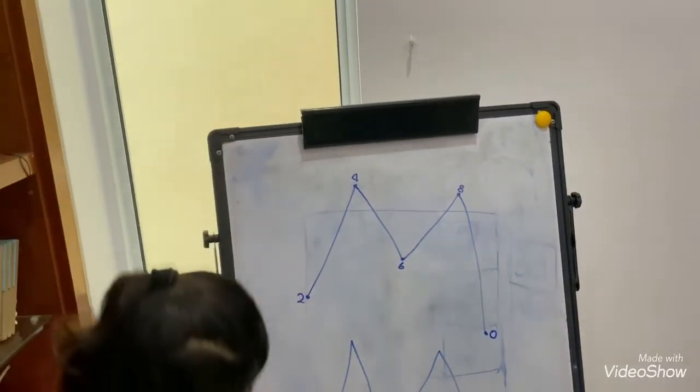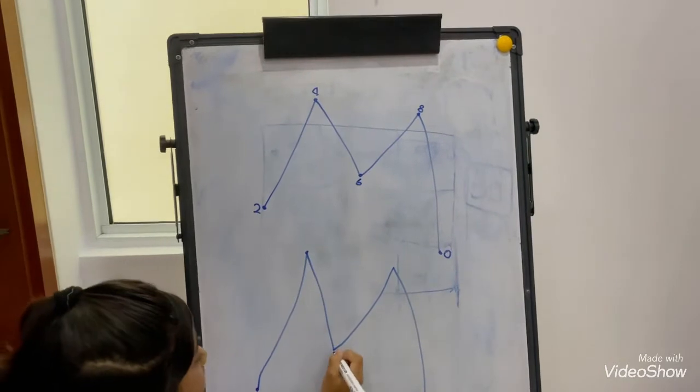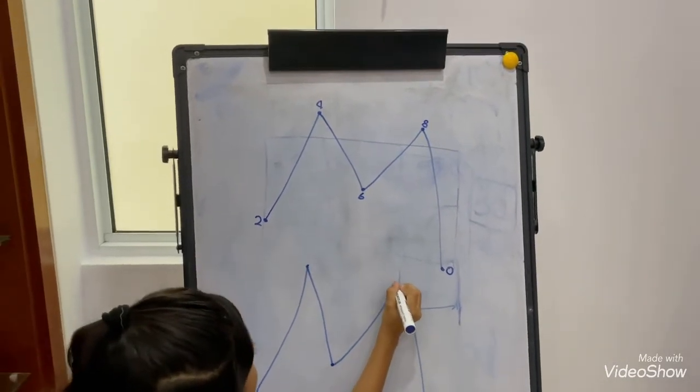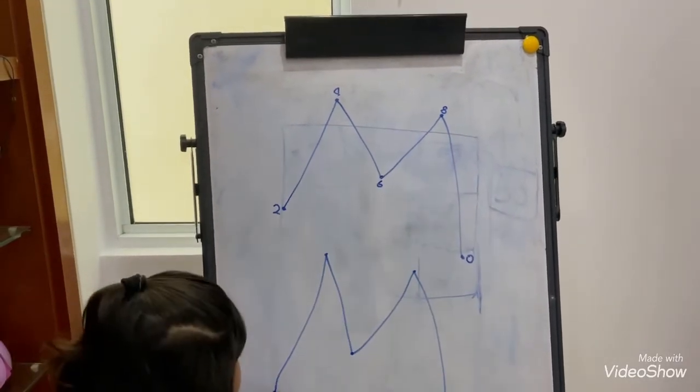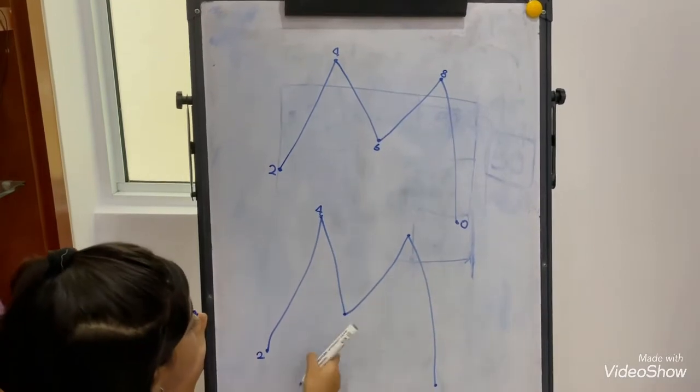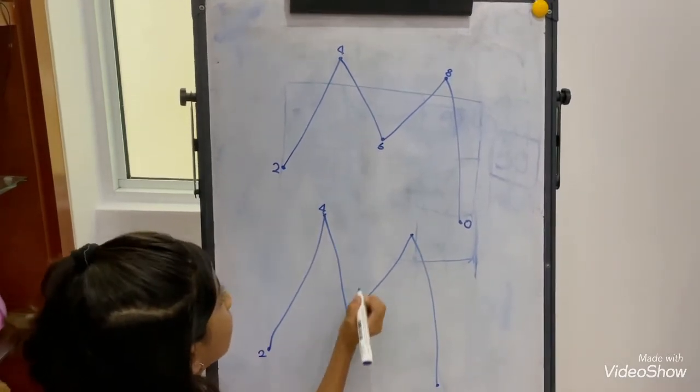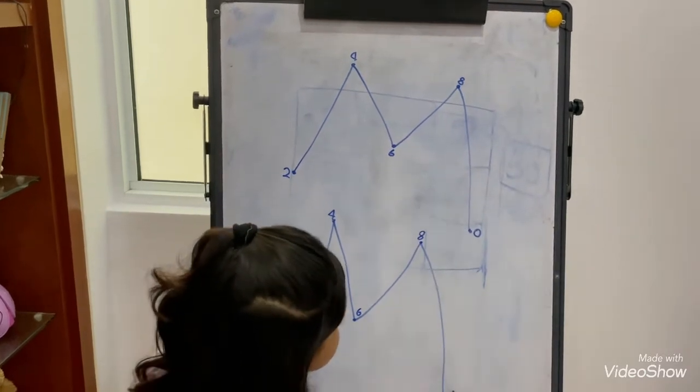So, in the other one, it's same. You have to write same like that. If you want, you can copy down the same thing. 1, 2, 4, 6, 8, 0.